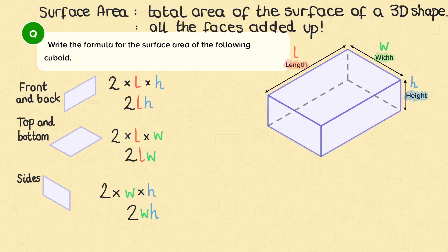So we have calculated all the faces of our object and added them up. The surface area is 2LH plus 2LW plus 2WH.